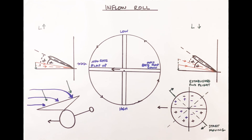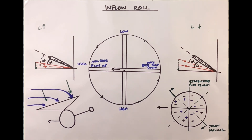That's pretty much all you need to cover. If you've been asked to describe inflow roll, you can add this last section to show how it relates to flap back and the effect of moving into forward flight. As always, if you have any questions, points, queries or corrections, please put them in the comments below and I'll get to them as quickly as I can.